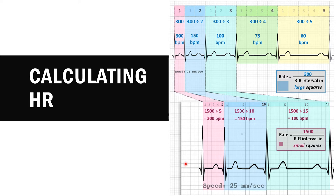If you are counting the number of small squares — which is more precise — between QRS complexes, you divide 1500 by that number. If you look at the EKG given, there are about nine small squares between two QRS complexes. So 1500 divided by 9 is about 166 beats per minute. This EKG has a heart rate of about 166 beats per minute, which is more than 100 beats per minute — one of the correct answers.